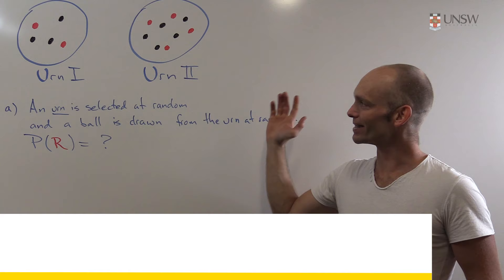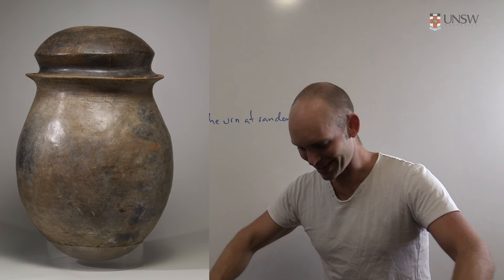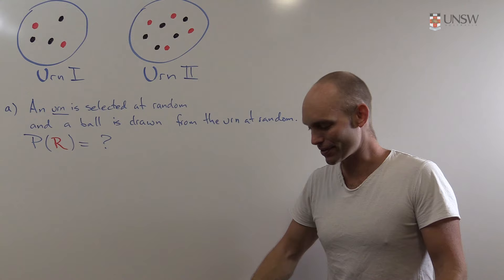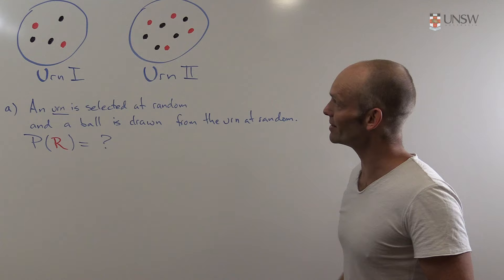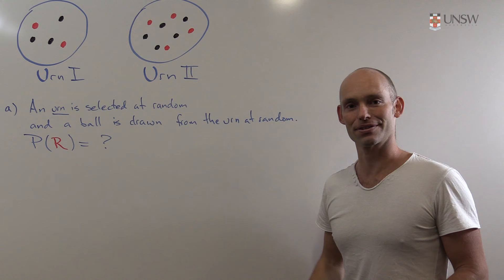This is a classical combinatorial problem, one of the many problems that you can phrase in terms of urns. An urn is just a clay bowl-type vase — essentially a container. Think of it as a bag with stuff in it. We have balls of different colors, red and black, and we can do various things with them. There are many fascinating problems of this type in combinatorics. Google 'Polya urns' if you're interested in more.